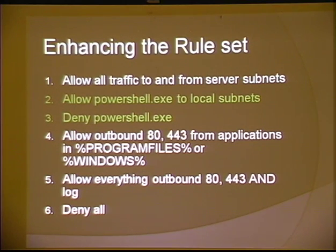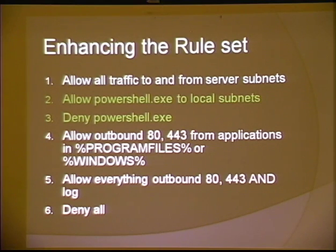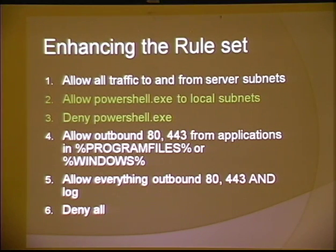Here's enhancing your rule set. Start by allowing all traffic to all your user subnets — figure out what your user subnets are. You can also define it by your domain. Usually it's client-to-server communications. If you're worried about client-to-client traffic, you can create rules about inter-subnet traffic. Here's an example: allow PowerShell to all local subnets, then deny it everywhere else so PowerShell can't talk outbound. You can use PowerShell for a lot of admin stuff, but you don't necessarily need PowerShell talking to the outside world. You can do this by hash, by application name, or both. Then allow outbound 443, 80, just the common stuff you use from Program Files and Windows, log everything, and then create another rule below that.